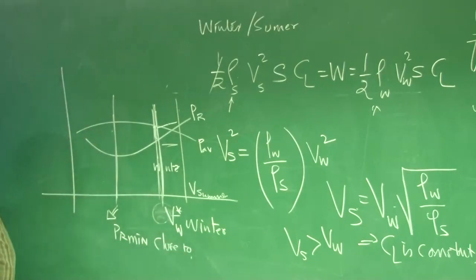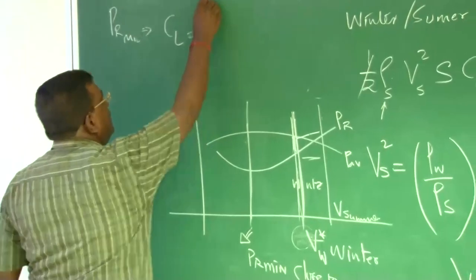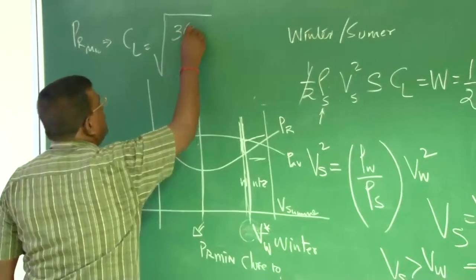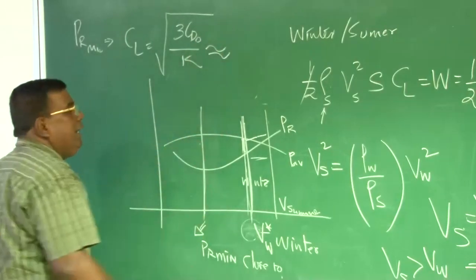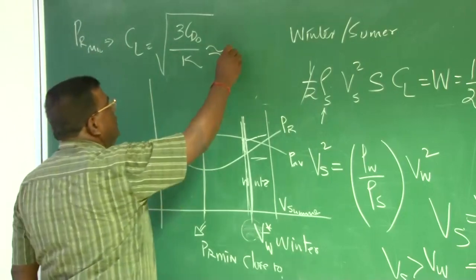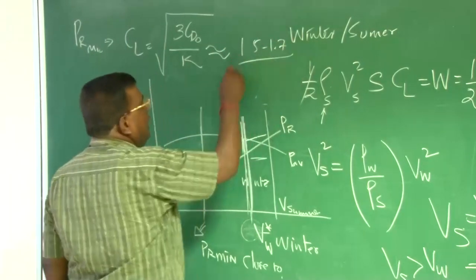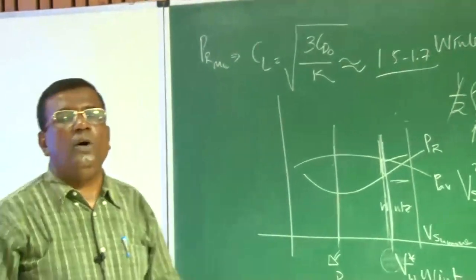And power required minimum means, PR minimum means, CL equal to square root of 3 CD0 by K. And this value, for a high aspect ratio machine, this may go between 1.5 to 1.7. And most of the UAVs, normal configuration, this is beyond the stall angle.